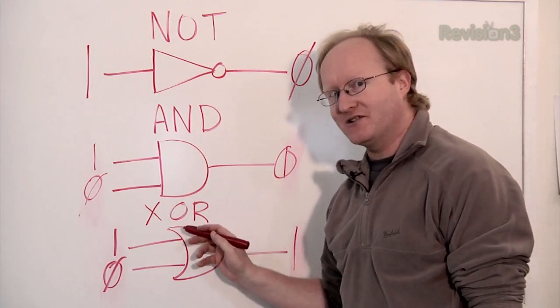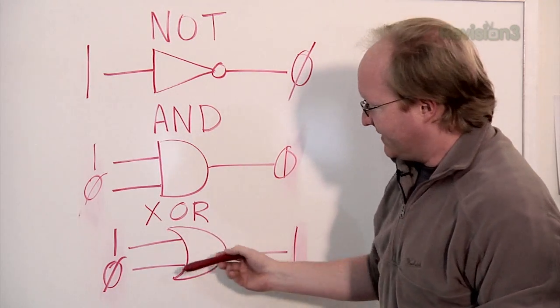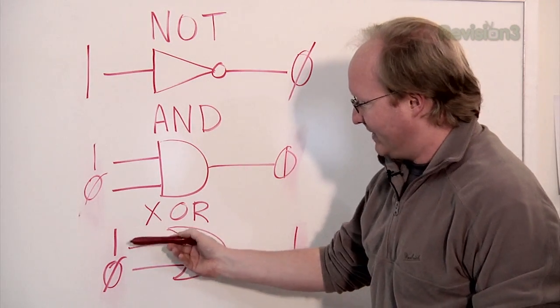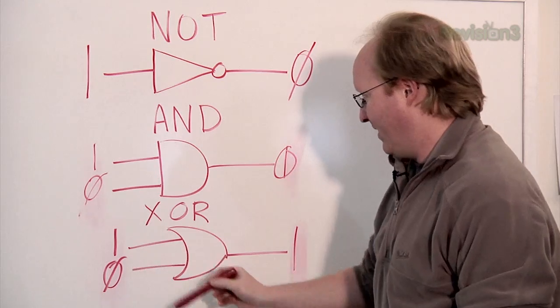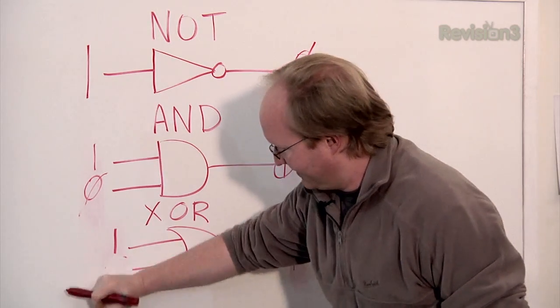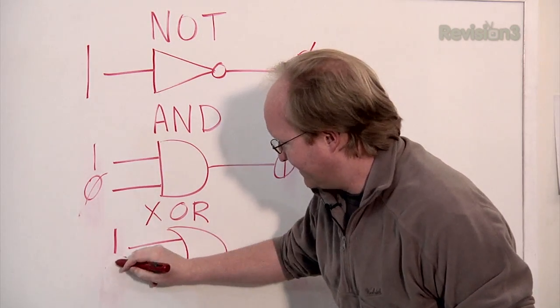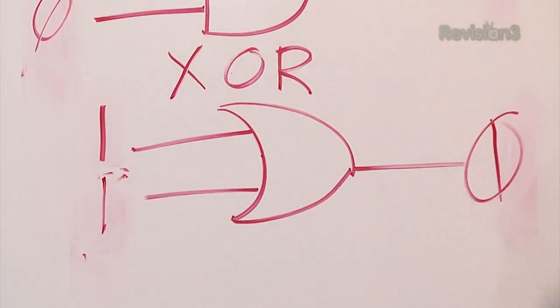There's also a gate called an XOR or exclusive or. What it does — this can be a one or this can be a one, but they both can't be one. So this would give you an output of one, but this would give you an output of zero.